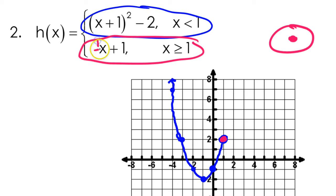From there, we know it just goes up 1 over 1, so it's just going to go up 1 over 1 like this.